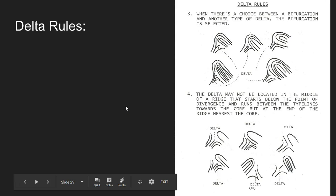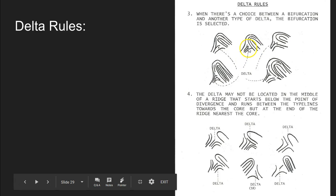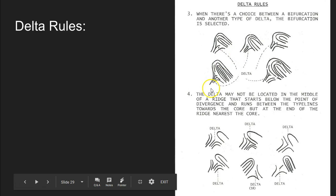Another rule about deltas: whenever you have more than one choice for what could be the delta, you always choose the bifurcation if it's one of the options. For example, if we have both a dot and a bifurcation as candidates, we always choose the bifurcation. Similarly, if the choice is between an ending ridge and a bifurcation, we always choose the bifurcation.